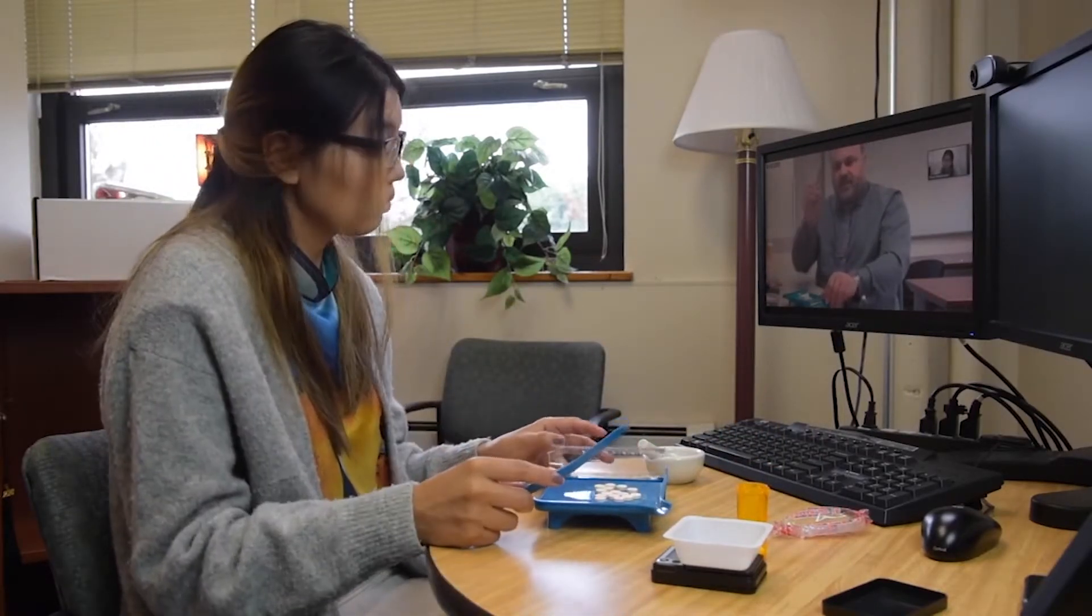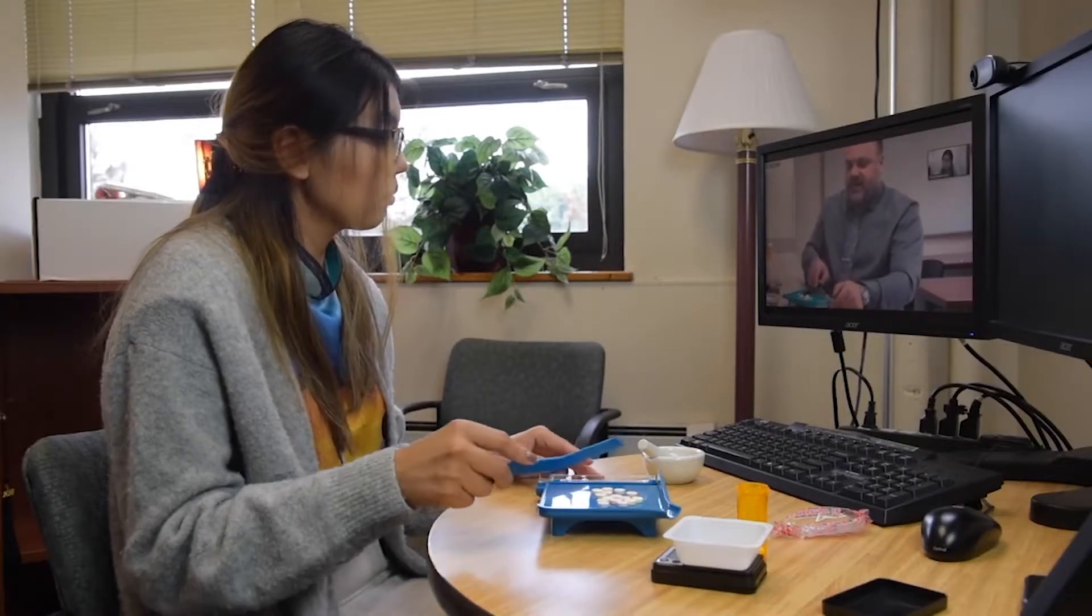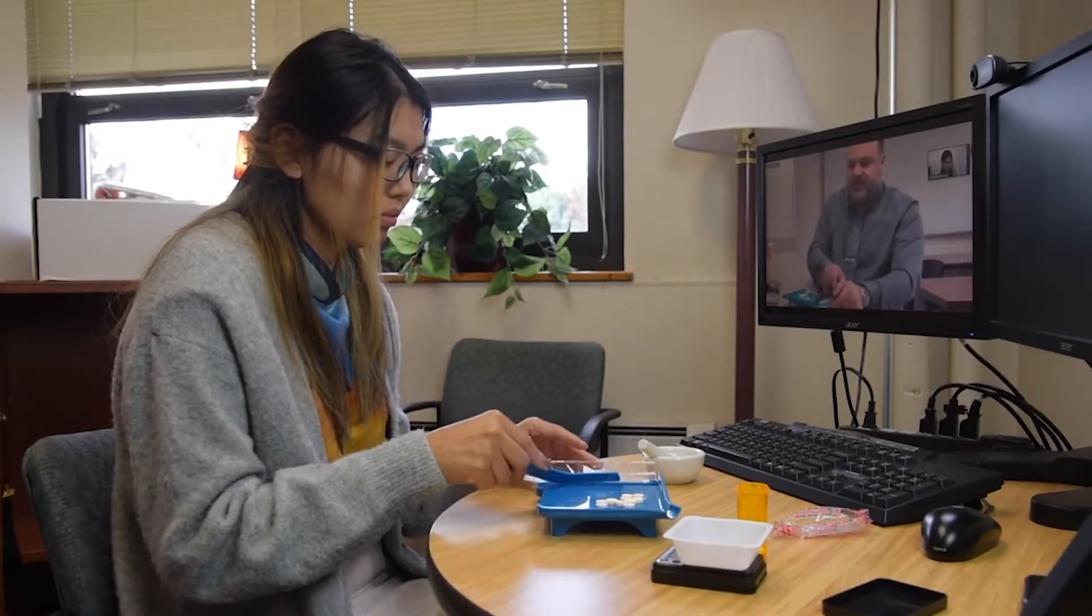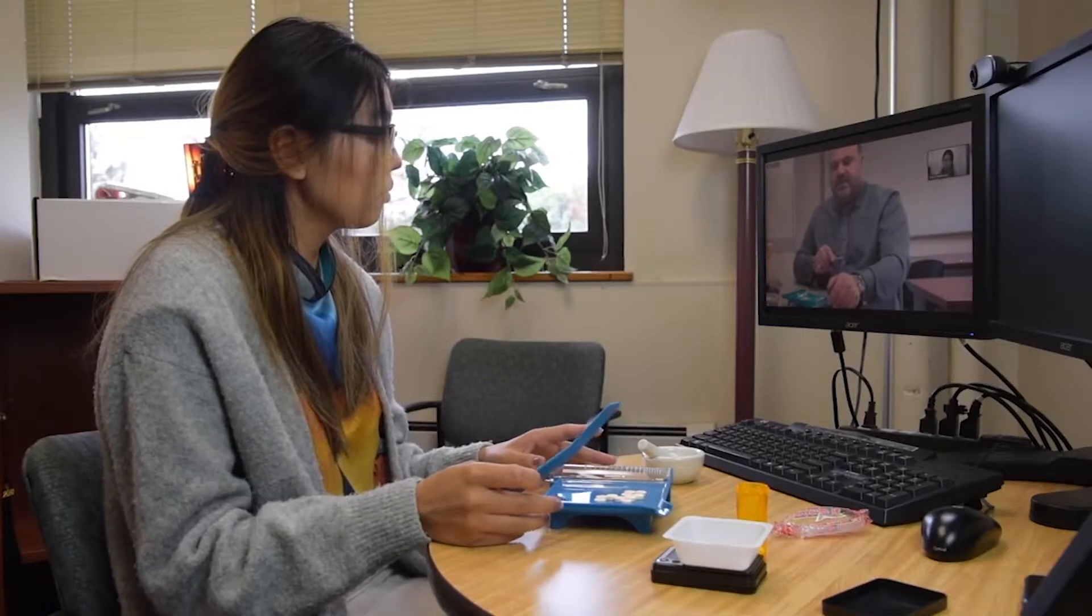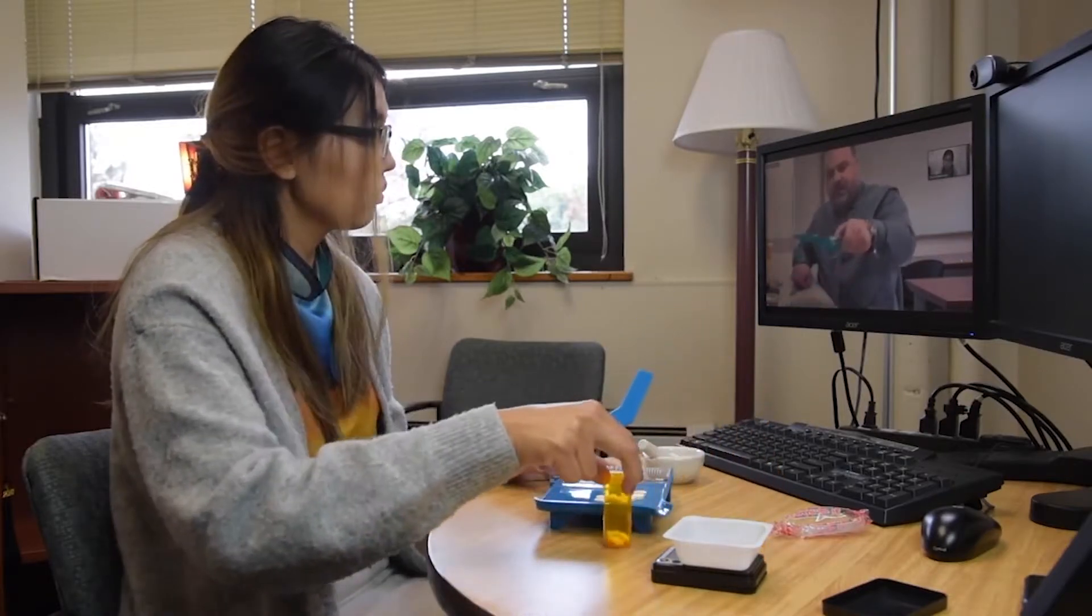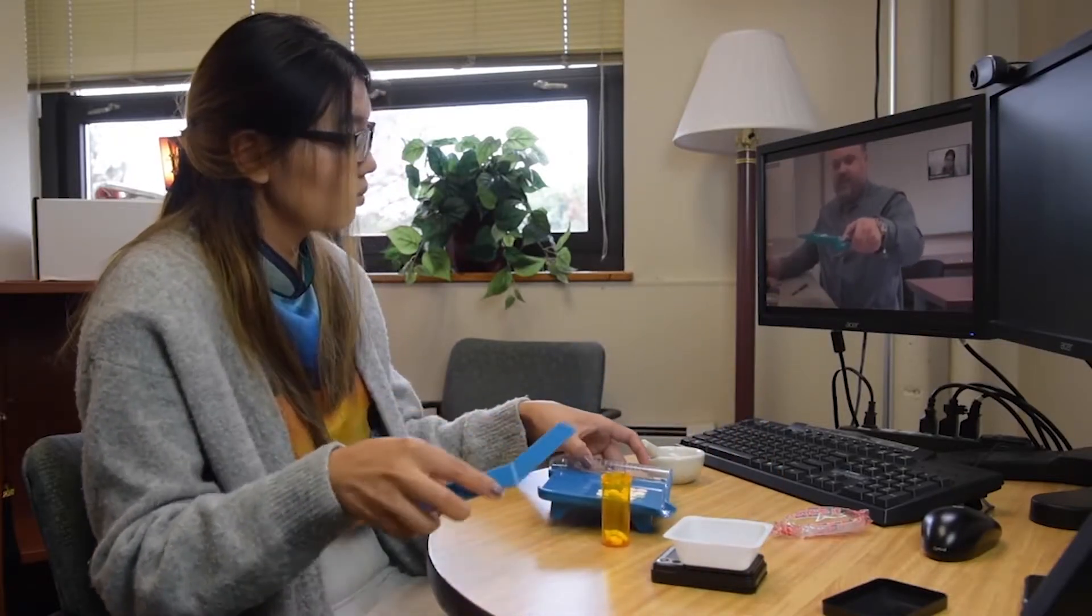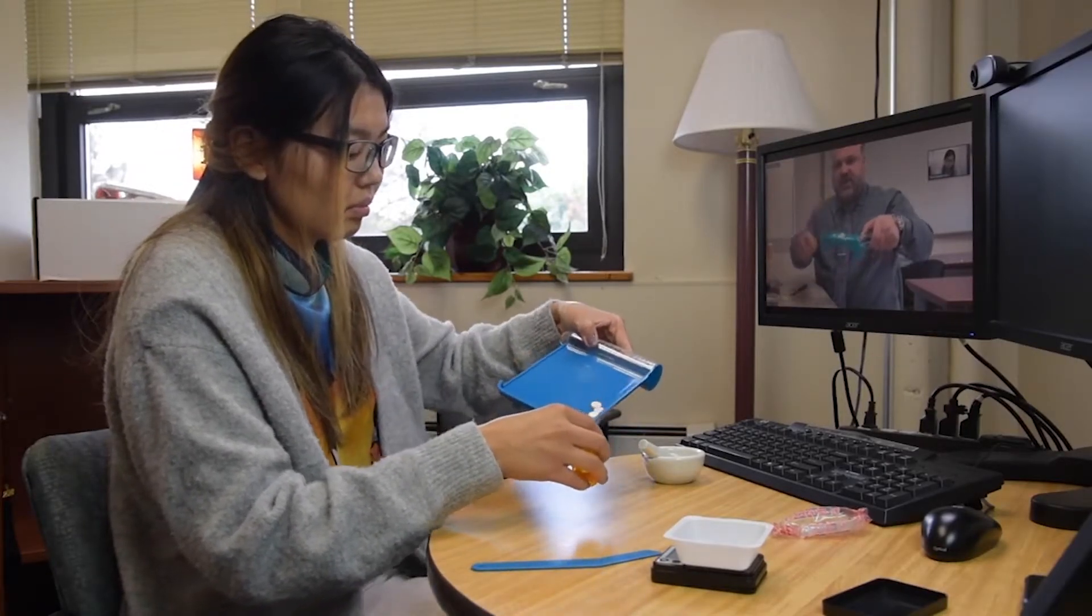Using your spatula, you're going to count out five Smarties. Slide them into the black container. Close the container, pick up the counting tray and pour the excess into your prescription vial.